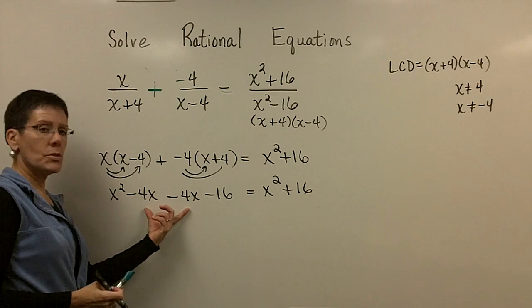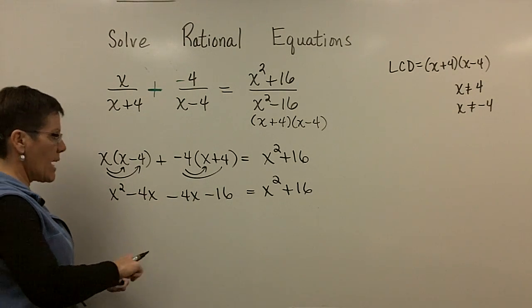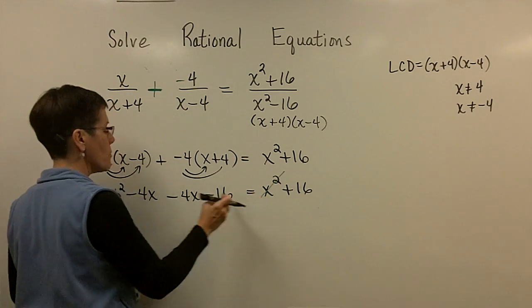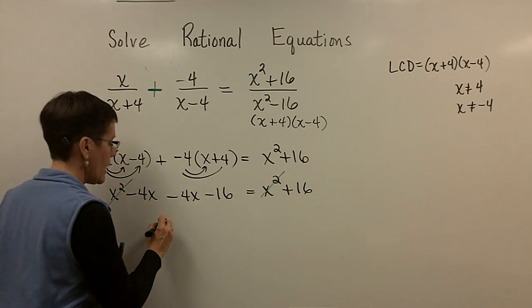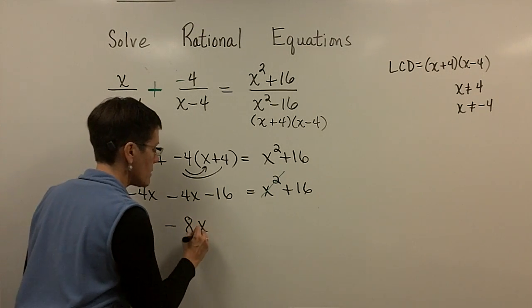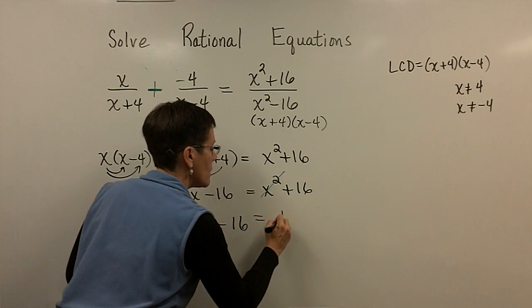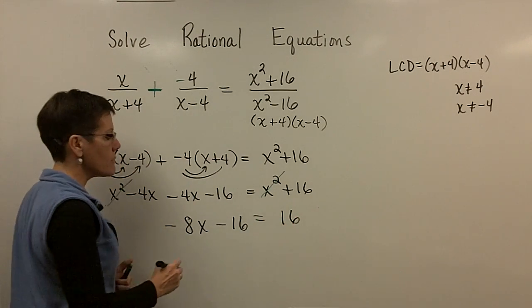Remember, it was a subtraction problem, and then I've got this x squared plus 16. So again, I'm going to collect those two and call that minus 8x, but I happen to see that if I subtracted x squared from both sides, those are going to disappear. So what I have now is minus 8x minus 16 equals 16, and I'm trying to solve for x.